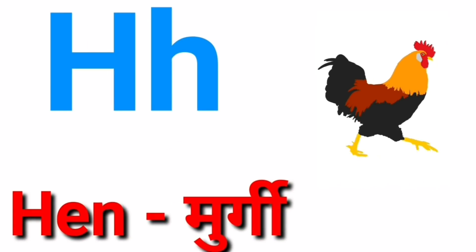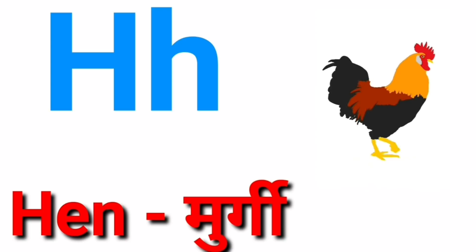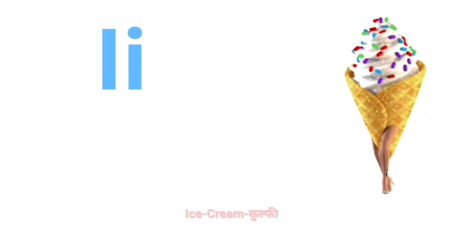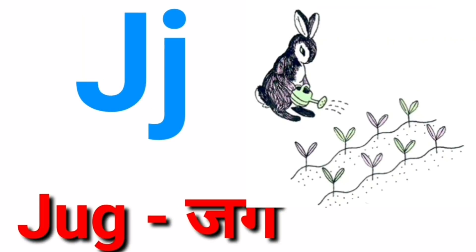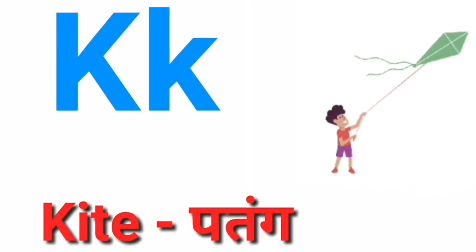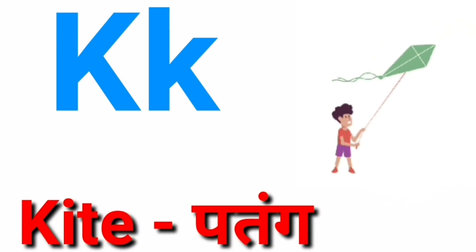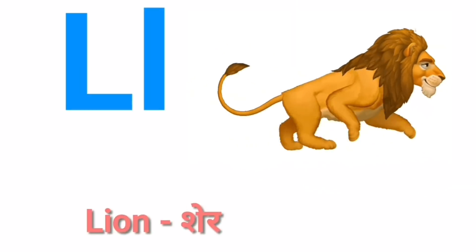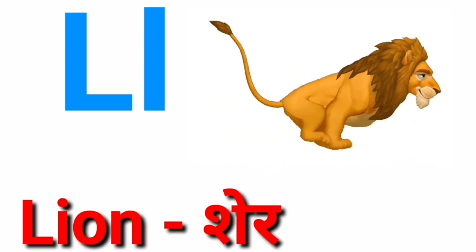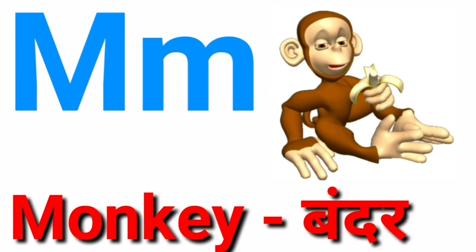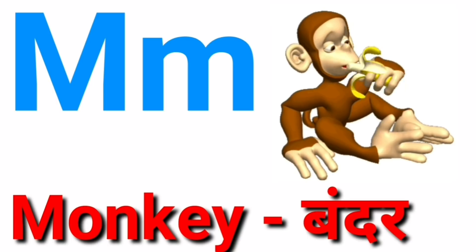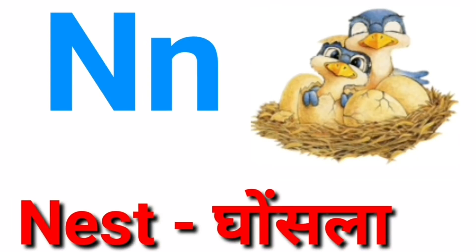H for hand, I for ice cream, J for jug, K for kite, L for lion, M for monkey, N for nest.